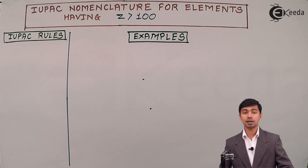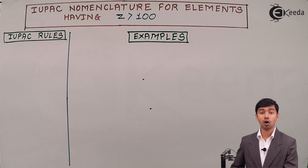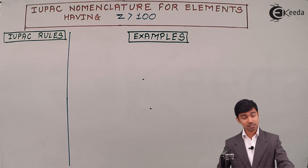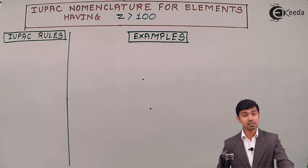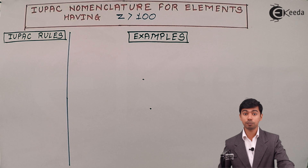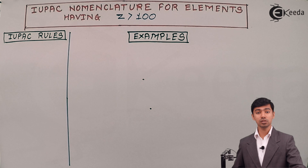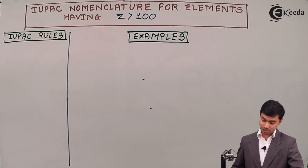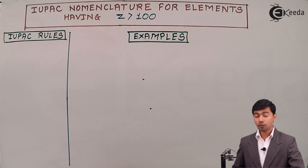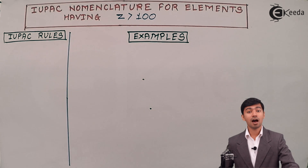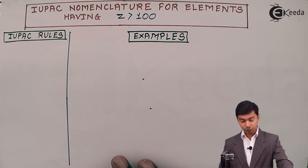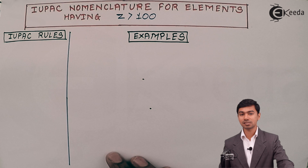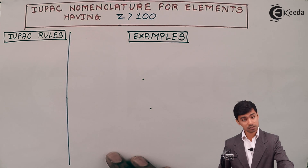To get rid of these problems, IUPAC has rules and regulations for the nomenclature of elements synthesized in the laboratory. IUPAC stands for International Union of Pure and Applied Chemistry, which sets up rules for nomenclature. We can use these same rules for the nomenclature of higher atomic number, man-made elements.